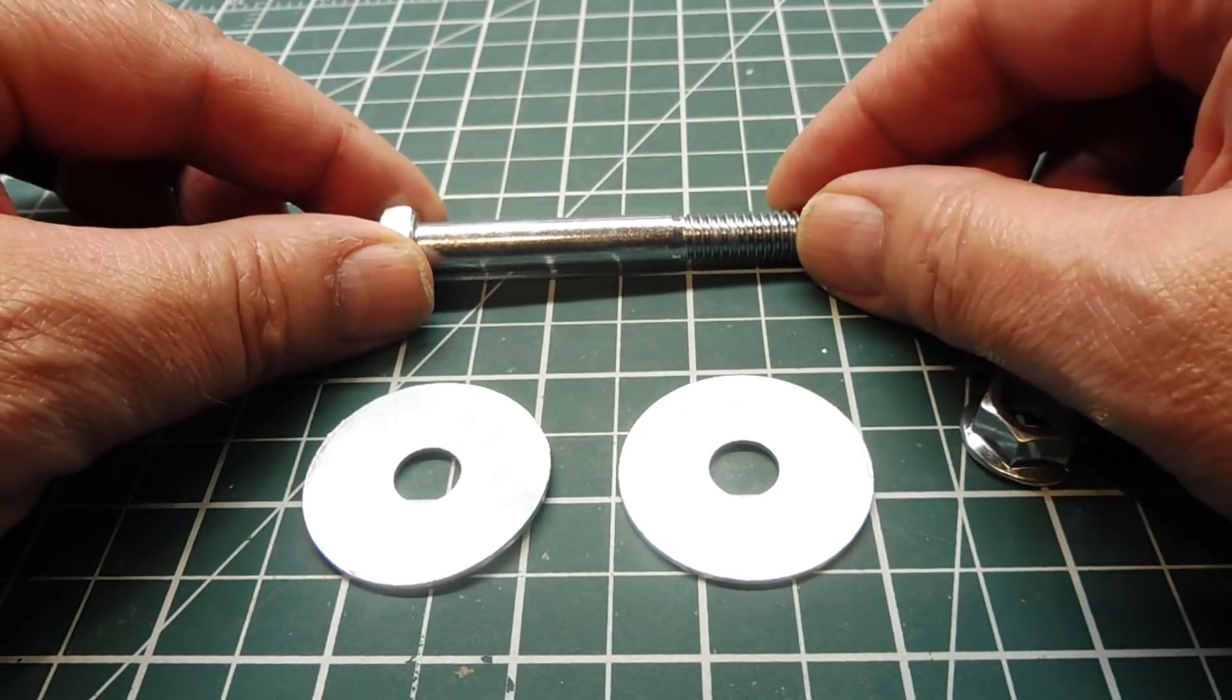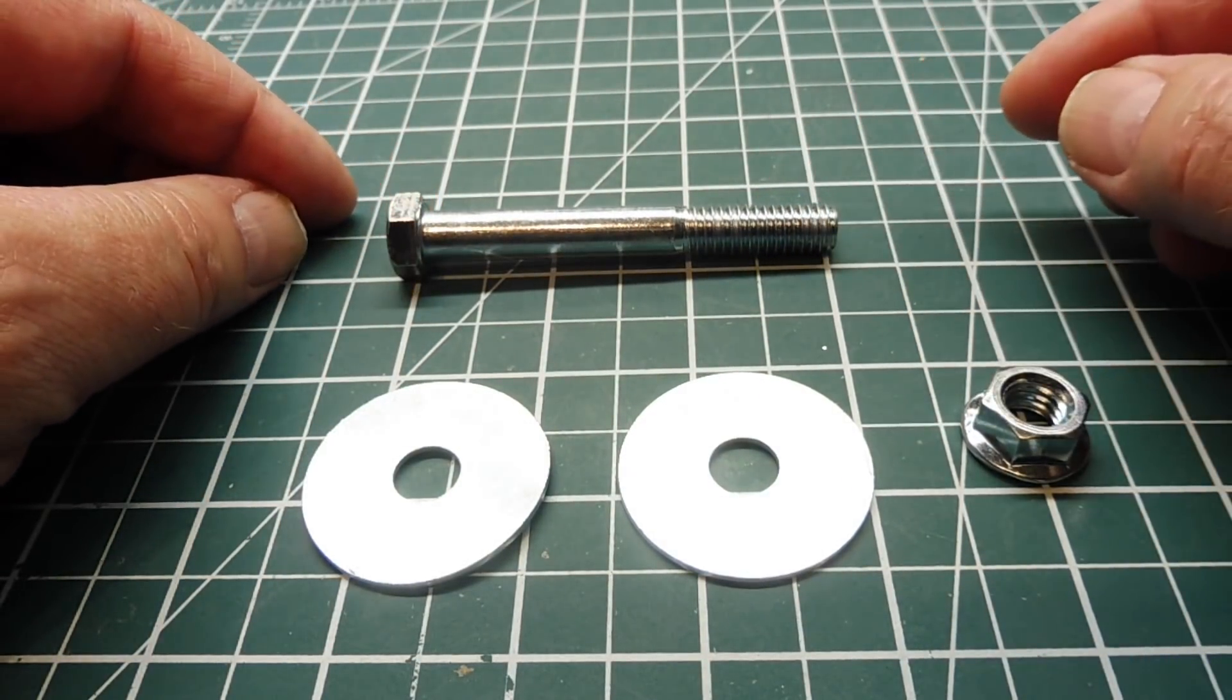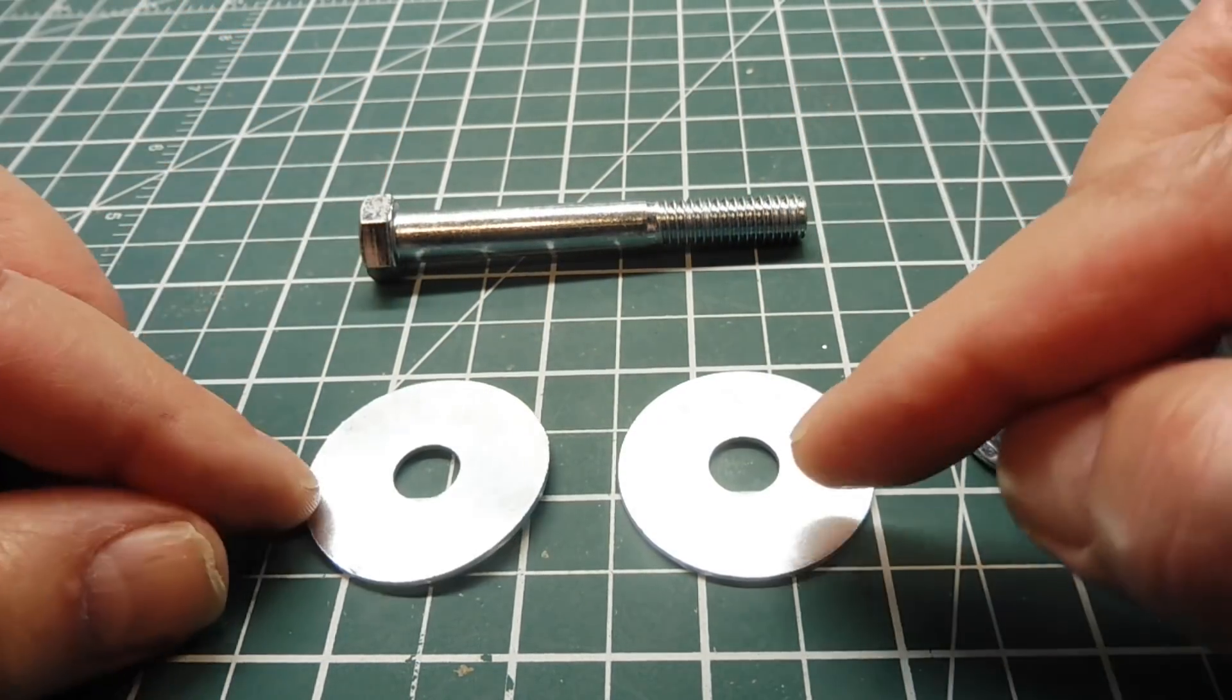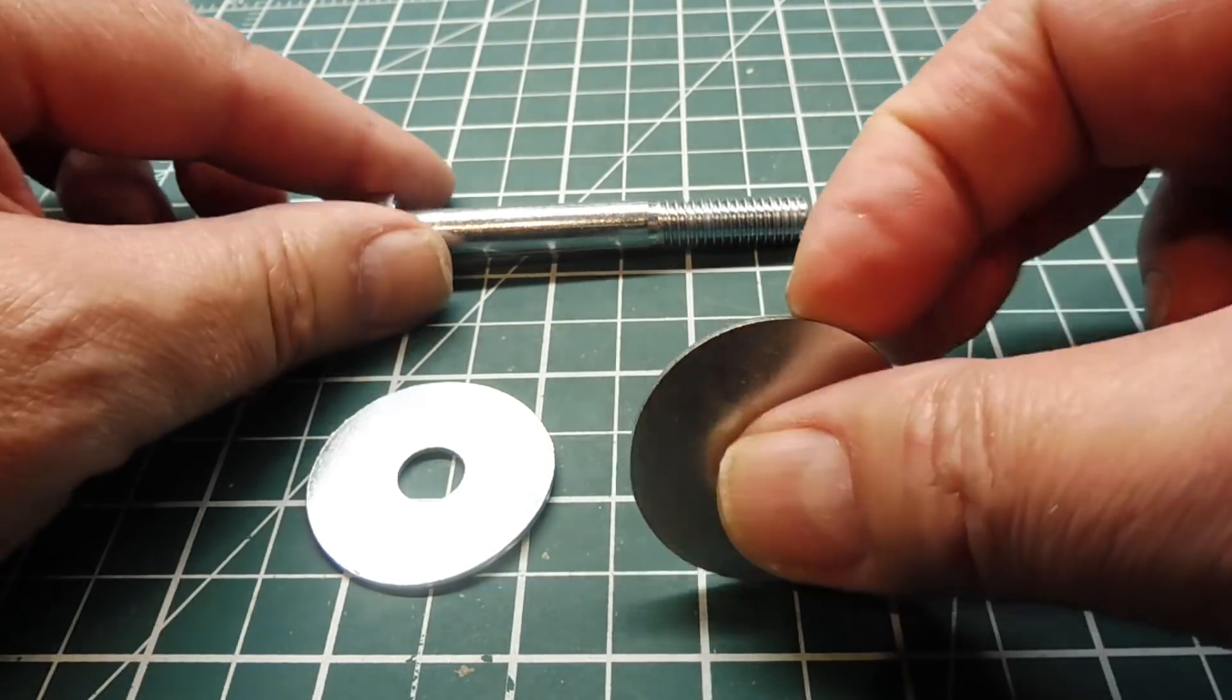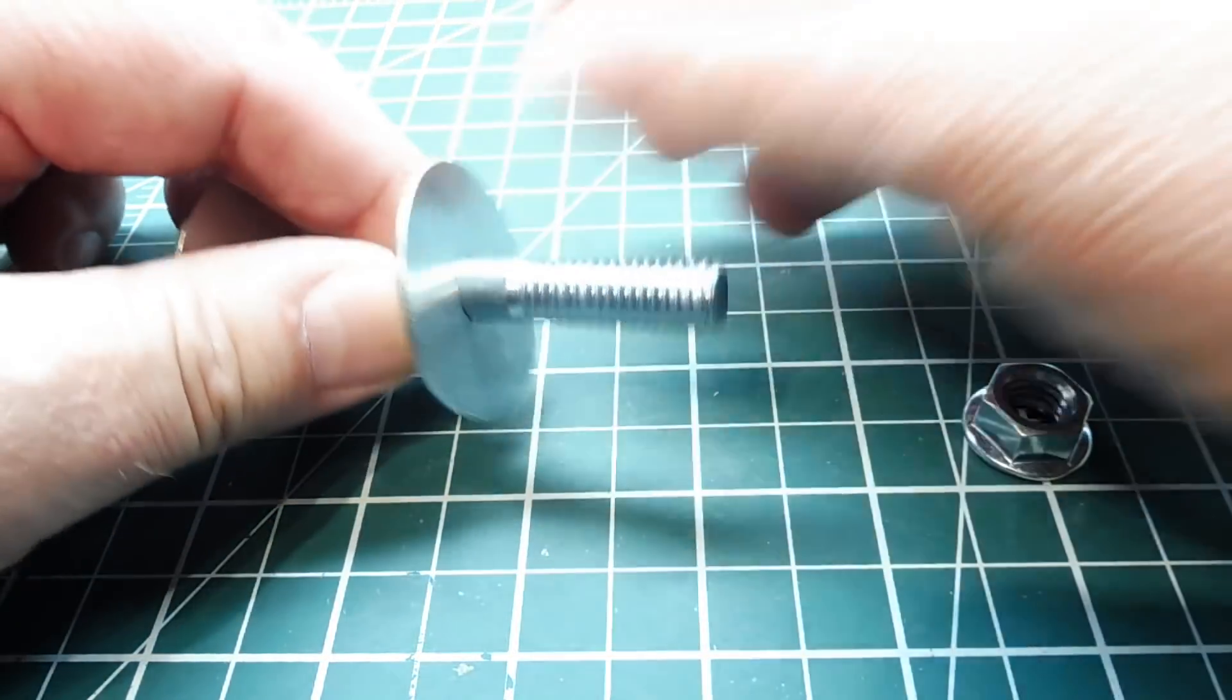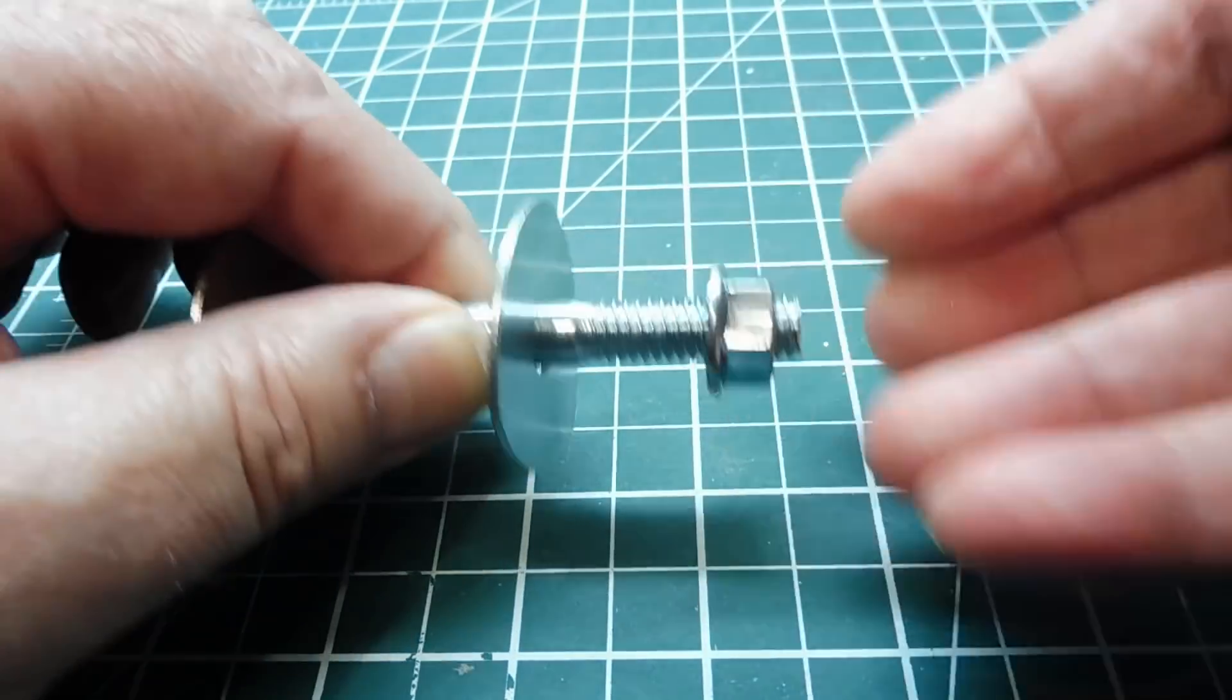Okay, the first thing that you will need is an electromagnet, and you could build your own. Just go to the hardware store and get a three inch bolt and two washers. These are one and a half inch washers. Slip them on the bolt and take a three inch nut and screw it all the way to the end.